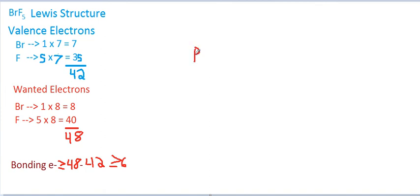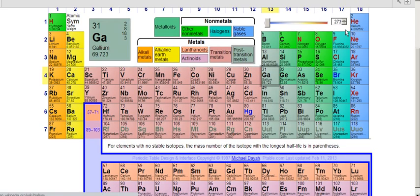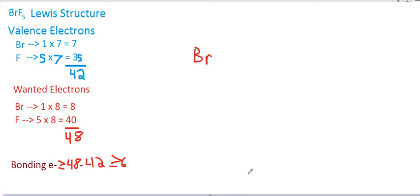Bromine is the central atom. It's the most electropositive atom of the two. Fluorine is more electronegative than bromine. Because fluorine is more electronegative, we assume it's not in the center. In fact, it can't be because fluorine is terminal. It can't have more than eight electrons and only needs one more electron for a complete octet. Therefore, it's going to be a terminal element.